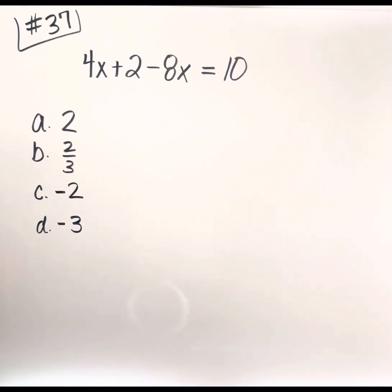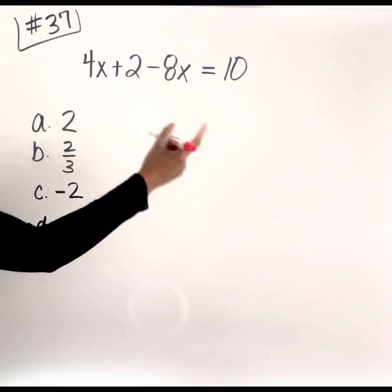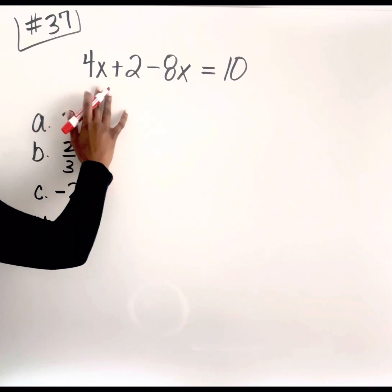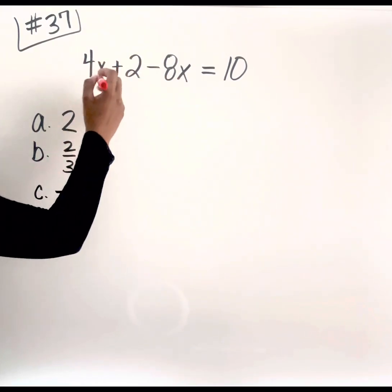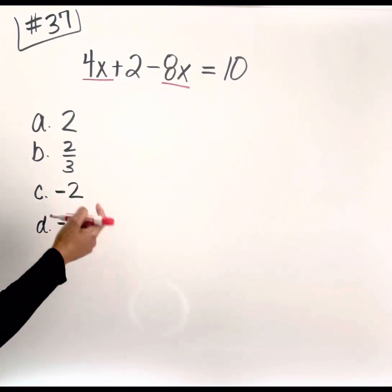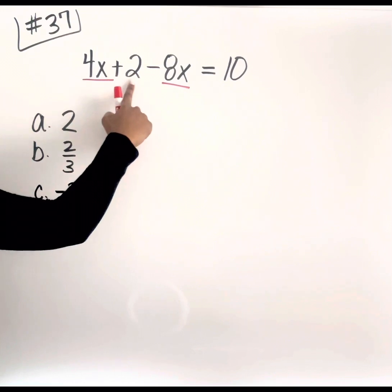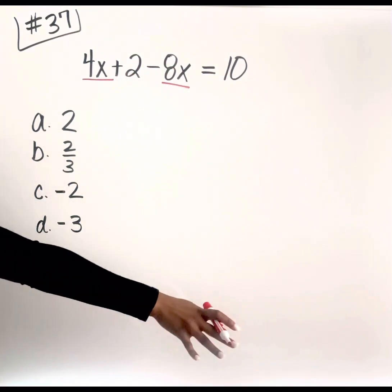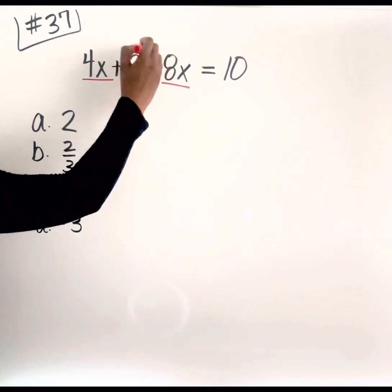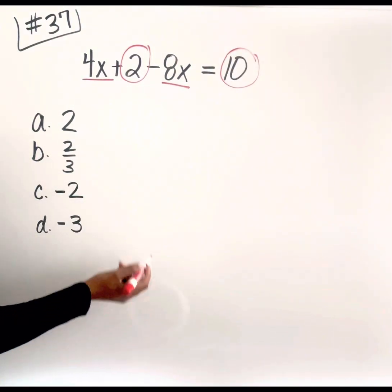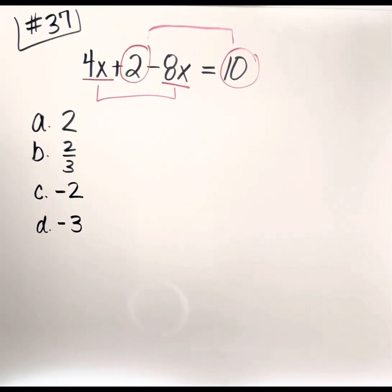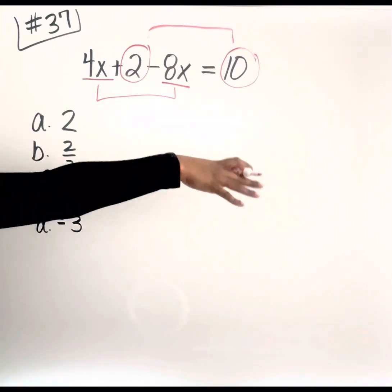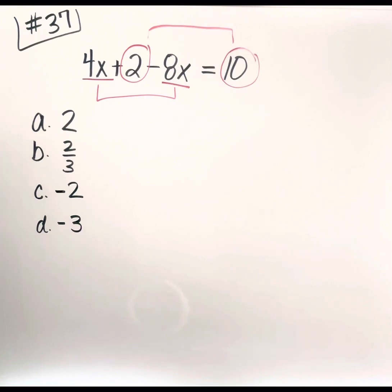The first thing I like to do is identify like terms — values that can actually be combined. Everything here can't all be combined through addition and subtraction. You see how 4 is attached to X and 8 is attached to X? Those are like terms, so I'll underline those because I can combine them. Then we have 2 and 10, which are constants — just numbers not attached to anything. So I'll circle those. That means 4X and 8X need to be combined, and 2 and 10 need to be combined. The goal is always to get the variable on one side equal to some value on the opposite side.